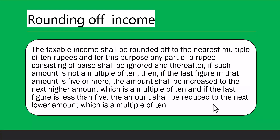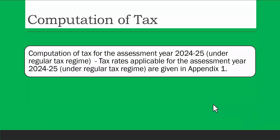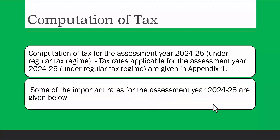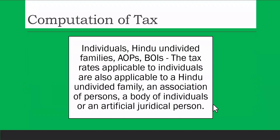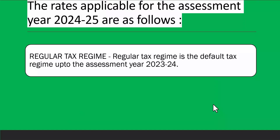For computation of tax for Assessment Year 2024-25 under the regular tax regime, the applicable rates are: up to Rs. 2,50,000 — no tax; next Rs. 2,50,000 — 5 percent; next Rs. 5 lakhs — 20 percent; above Rs. 10 lakhs — 30 percent. The regular tax regime was the default regime up to Assessment Year 2022-23.